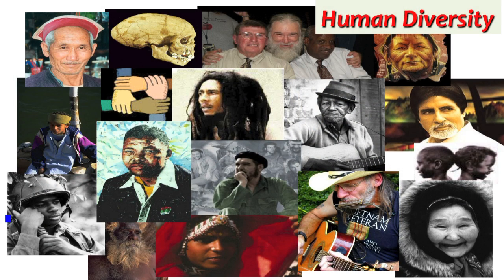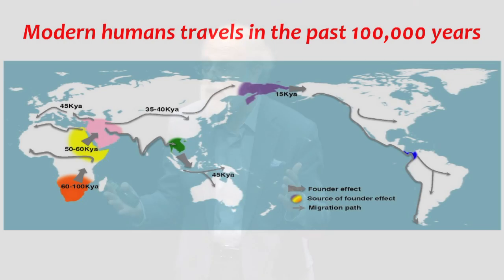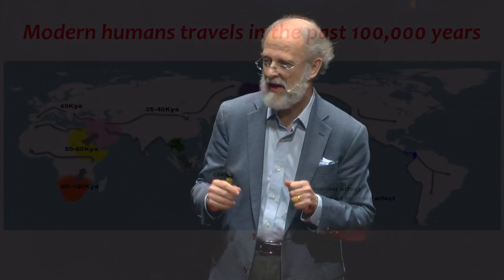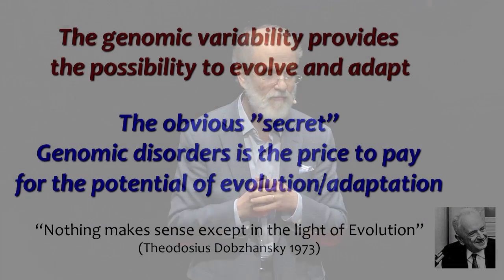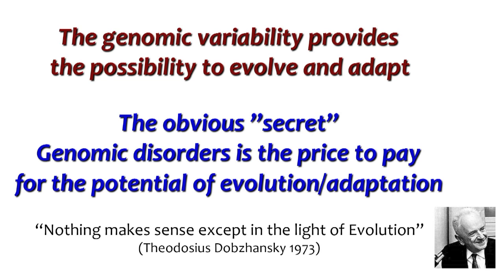But each one of us has a 0.9% difference between two individual genomes, and that makes the fantastic variability we have as a human species — the different characteristics, different kinds of intelligence, different cultures, different modes of art, different achievements. We need this variability because it provides us the possibility to evolve and adapt to the ever-changing environment. But in life there's no free lunch. The price we pay for this variability is genetic disorders — the price for the potential of evolution and adaptation. As a famous population geneticist said, nothing in medicine makes sense except in the light of evolution.